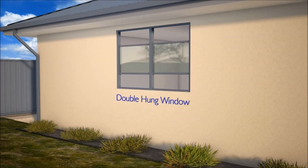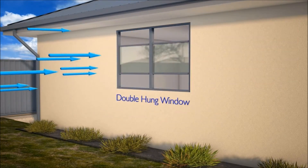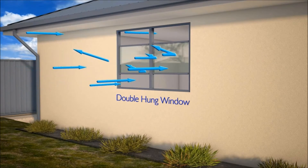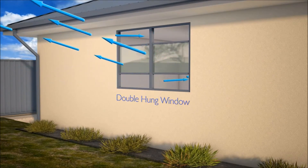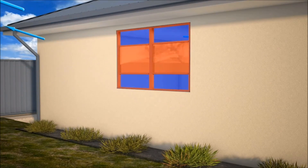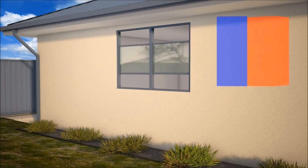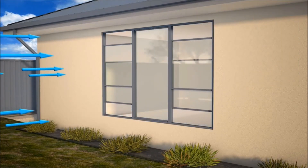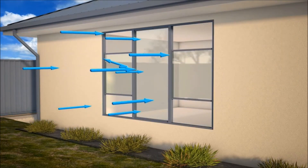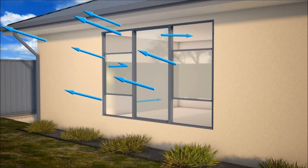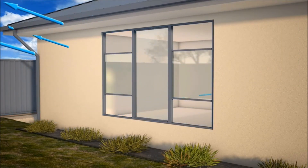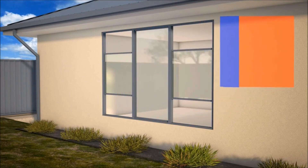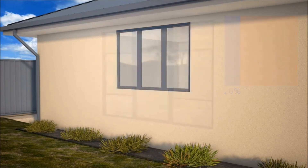Even when fully open, the sashes of double hung windows block half of the window area from allowing ventilation. Increasing the size of double hung windows introduces fixed panes, which further reduces their ventilation benefits.